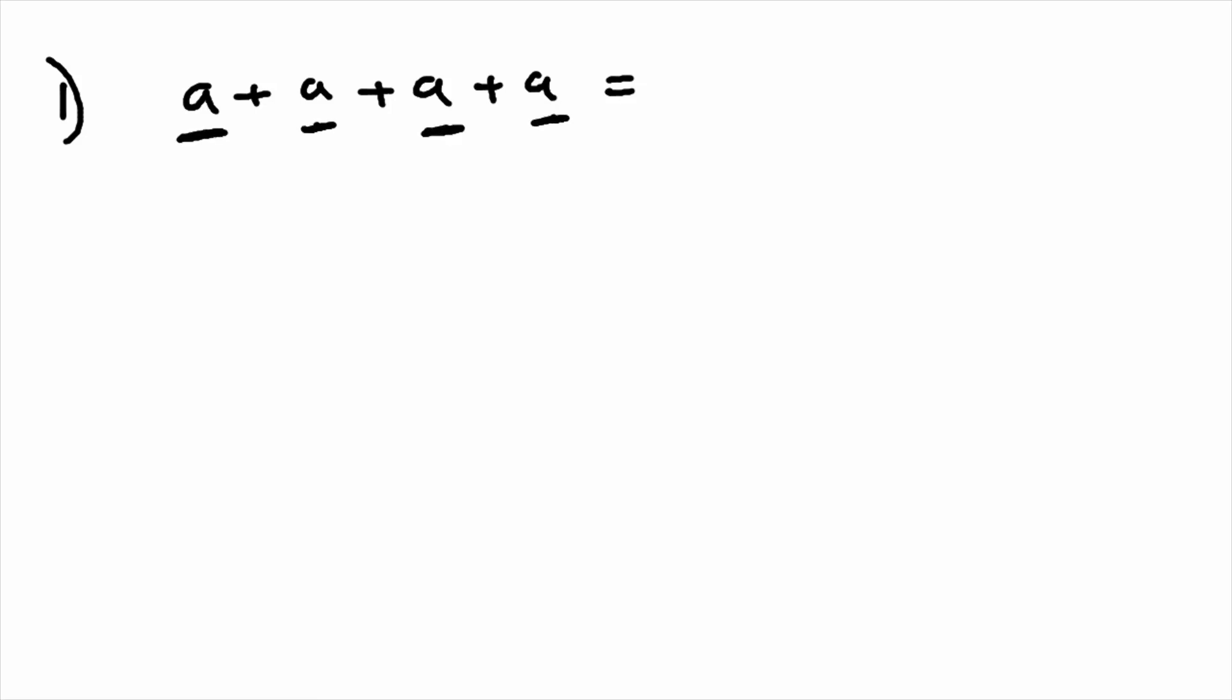We've got an A plus an A plus another A plus a fourth A, so we've got four lots of A. Remember, four A also means four times A. It's just this way is a much shorter way of expressing it.